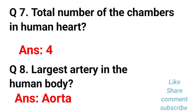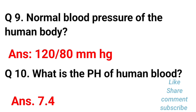The total number of chambers in the human heart is 4. The largest artery in the human body is the aorta. The normal blood pressure of the human body is 120 by 80 mmHg.